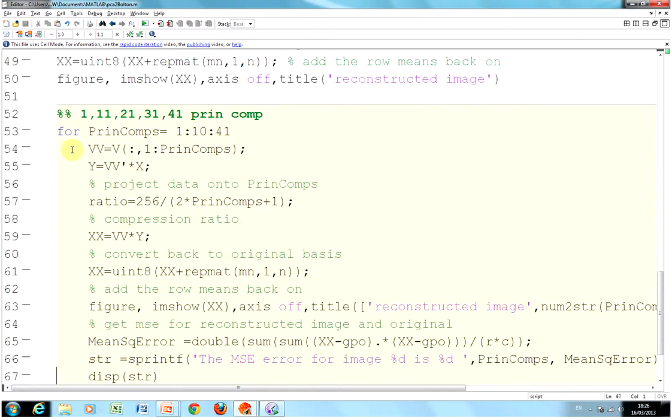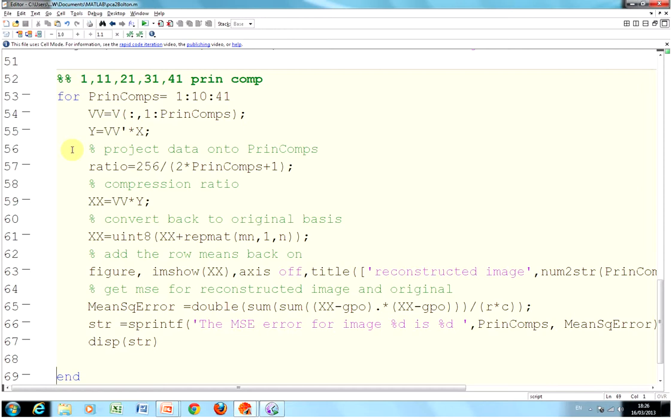I got some sort of compression ratio there, and then I had to convert back to the original basis on line 48, and then I had to remove the means entering on line 49, and on line 50 I showed the reconstructed image. What I did here was, on lines 52 to 69, I got the first principal component, the sum of the first 11, the sum of the first 21, the sum of the first 31, the sum of the first 41, and I got five images, and I displayed the five images. I should have written a little function, but I didn't, but I got the mean square error, so I got the original image that I read in, and the reconstructed one, and I got the mean square error for each of them, and as you see here when we run it, the mean square error drops as the more principal components you take.